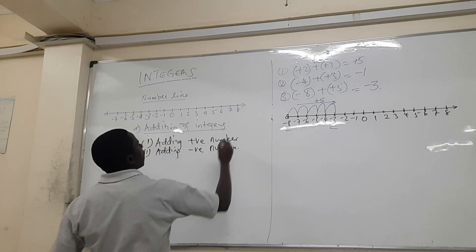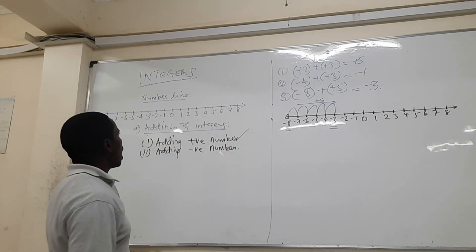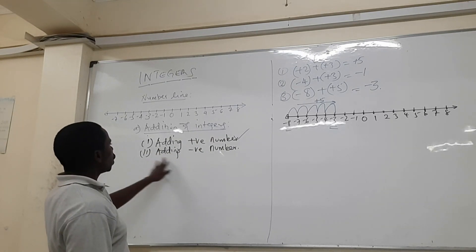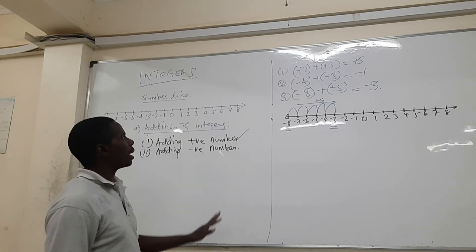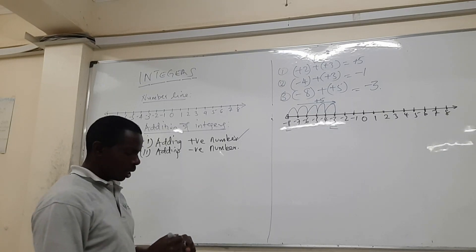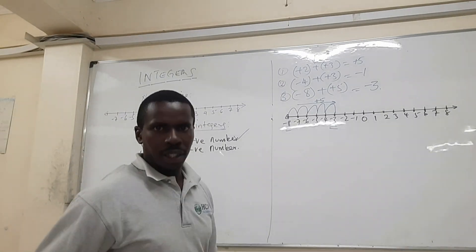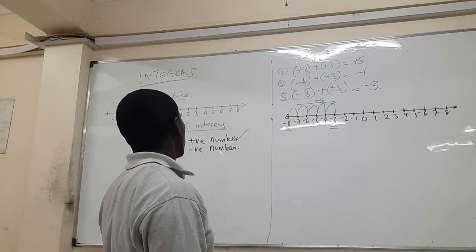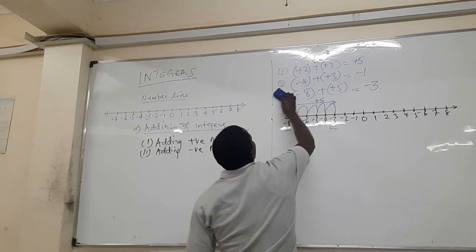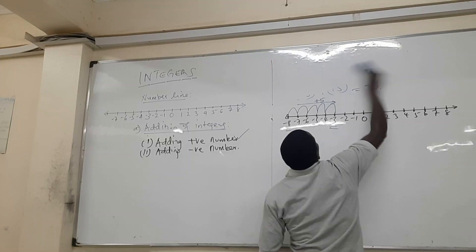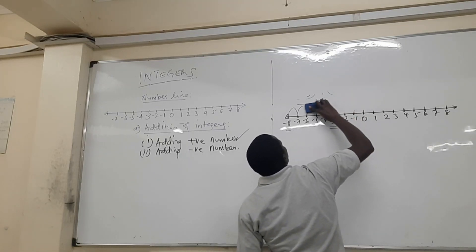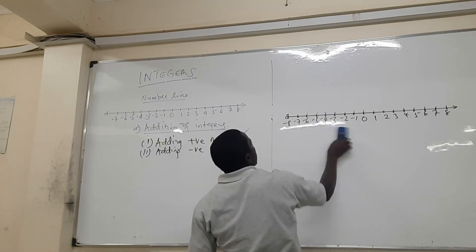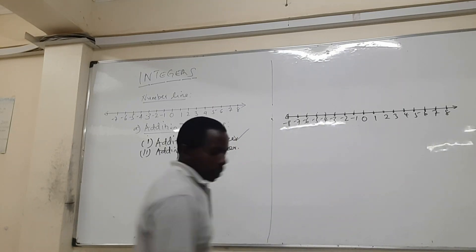Another case of adding integers using the number line is when you are adding a negative number. Let's look at that. We are going to use the same number line to demonstrate this.